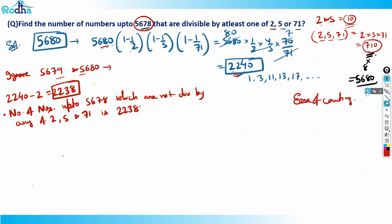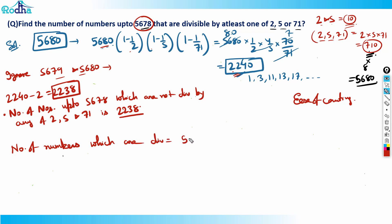So the number of numbers up to 5678 that are NOT divisible by any of 2, 5, or 71 is 2238. Therefore, the number of numbers that ARE divisible by at least one of 2, 5, or 71 is 5678 − 2238 = 3440. That's the answer.